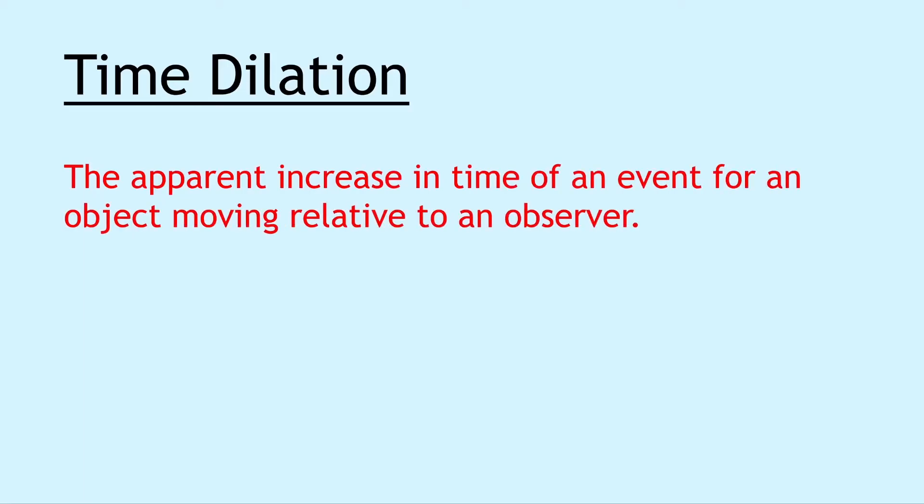Next we have time dilation for special relativity. And this is the apparent increase in time of an event for an object moving relative to an observer. And the clue to help you remember that the time will increase is this word dilation which just means to get bigger. So if your pupils dilate for example, they get bigger. So this means time gets bigger or longer or in other words time slows down. Remember you also get an equation for time dilation on your relationship sheet.